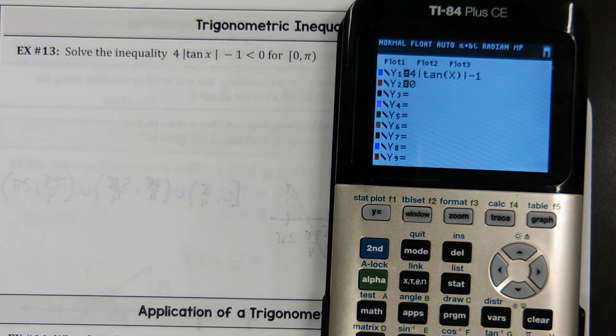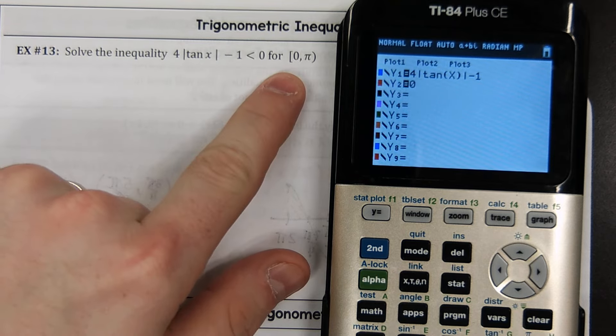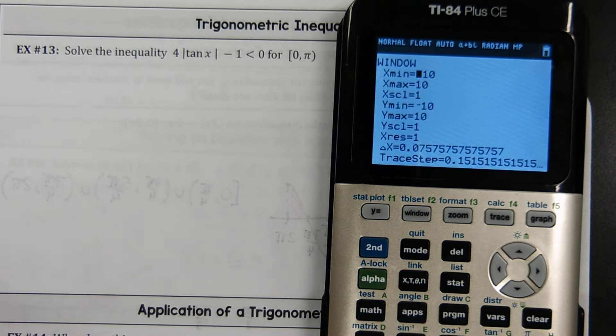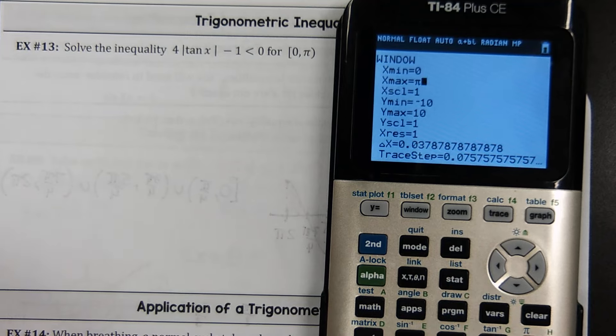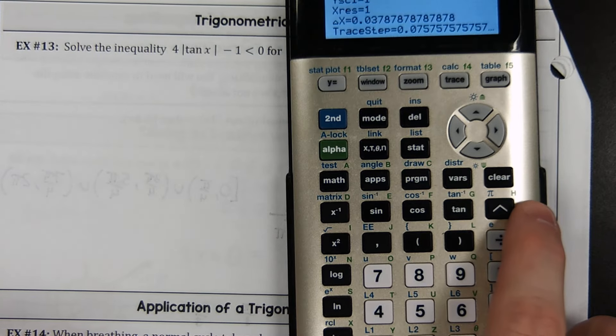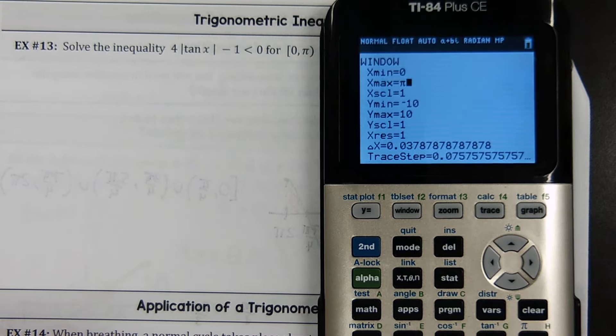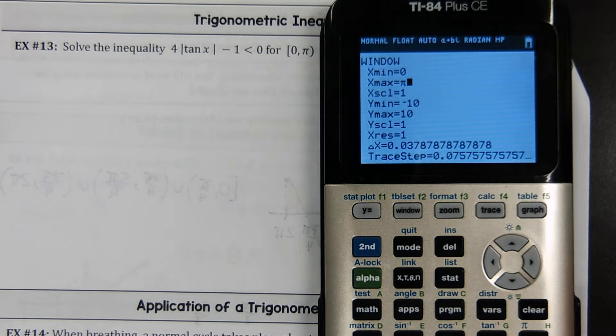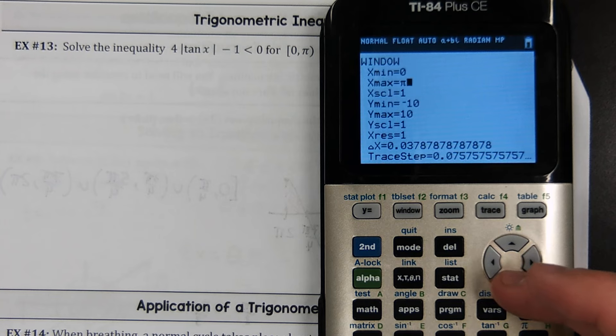If we're saying less than 0, we want to know where this thing is below the x-axis. I suggest you say that the other equation is y equals 0. This way, we can use second trace intersect to see where the two things intersect one another. It's faster than second trace 0, which is how you would track down where a graph crosses the x-axis. Second trace intersect is faster. So anytime I have to find an x-intercept, I just throw y equals 0 on there and use second trace intersect.